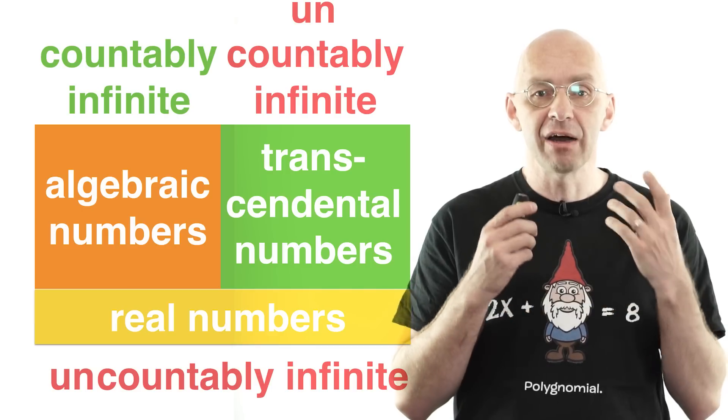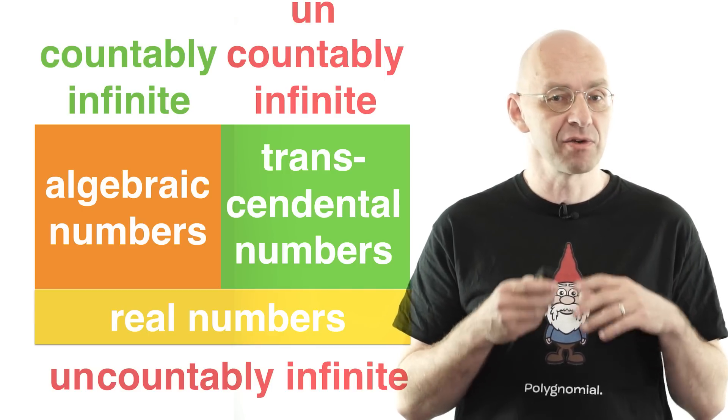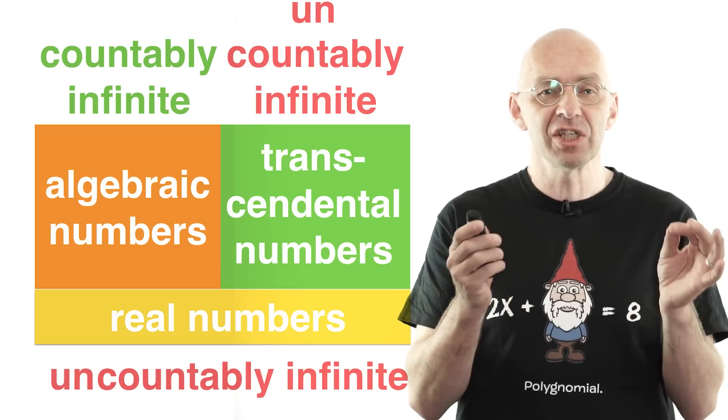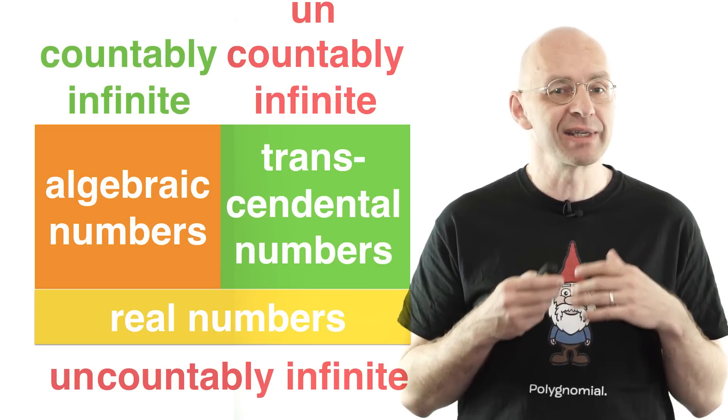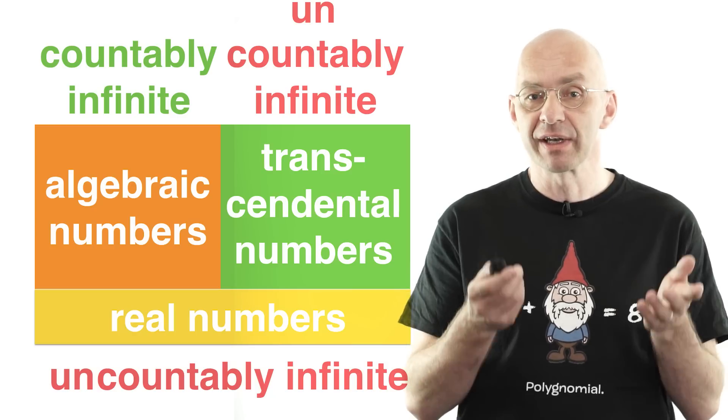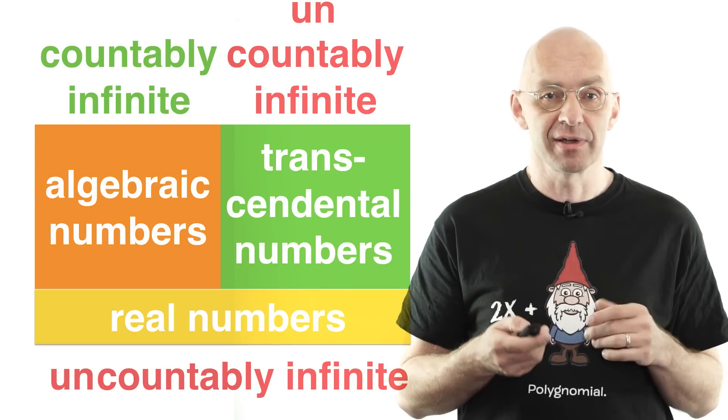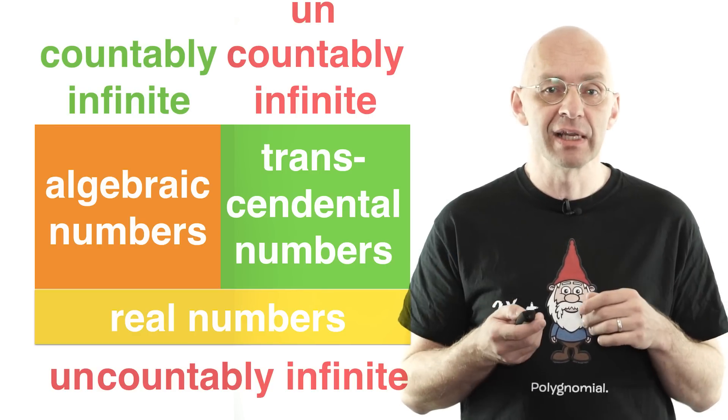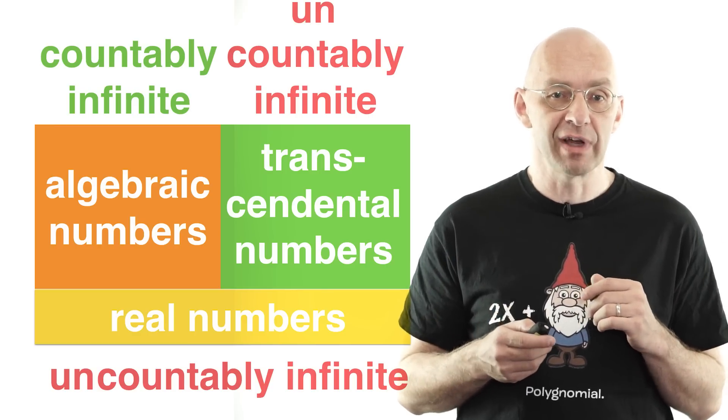I want to show you that a countably infinite set of numbers like the rational numbers or the algebraic numbers are vanishingly small when compared to an uncountably infinite set like the real numbers, the transcendental numbers, or the irrational numbers. Here's a nice argument that illustrates this in the case of the rational numbers.